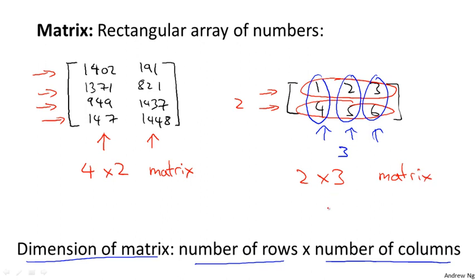And sometimes you also see this written out as, in the case of the left, you see this written out as R four by two. Or concretely, what people will sometimes say is that this matrix is an element of the set R four by two.